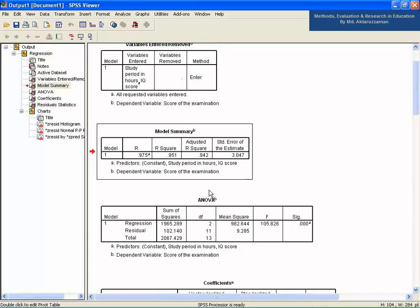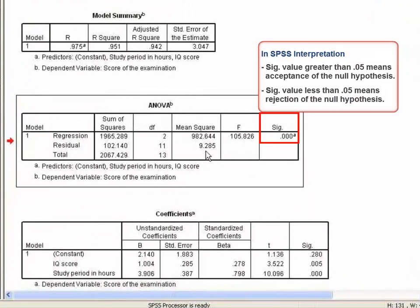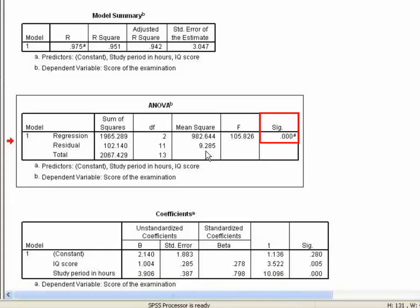In SPSS's interpretation, SIG value greater than 0.05 means acceptance of the null hypothesis. And on the other hand, SIG value less than 0.05 means rejection of the null hypothesis. The details are described in chapter 10 of the book. The SIG value of regression is 0.000 at the ANOVA table, which is less than 0.05.